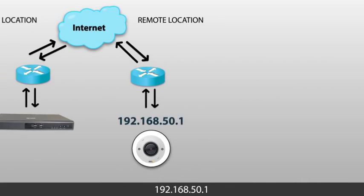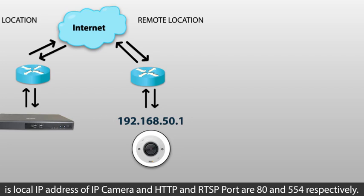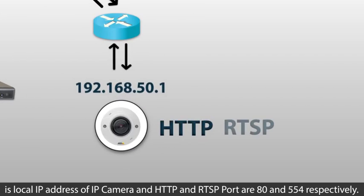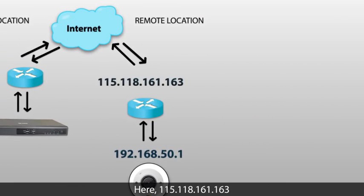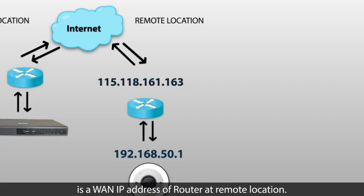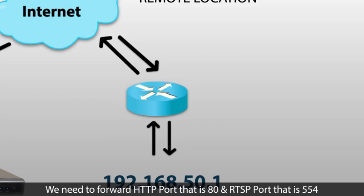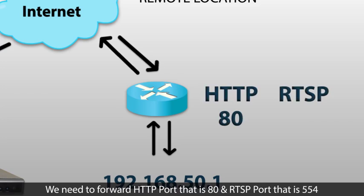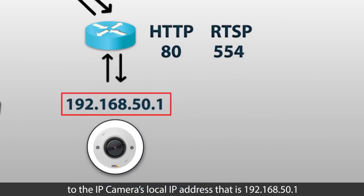For instance, 192.168.50.1 is the local IP address of the IP camera, with HTTP and RTSP ports 80 and 554 respectively. Here, 115.118.161.163 is the WAN IP address of the router at the remote location. In the router of the remote location, we need to forward HTTP port 80 and RTSP port 554 to the IP camera's local IP address, 192.168.50.1.